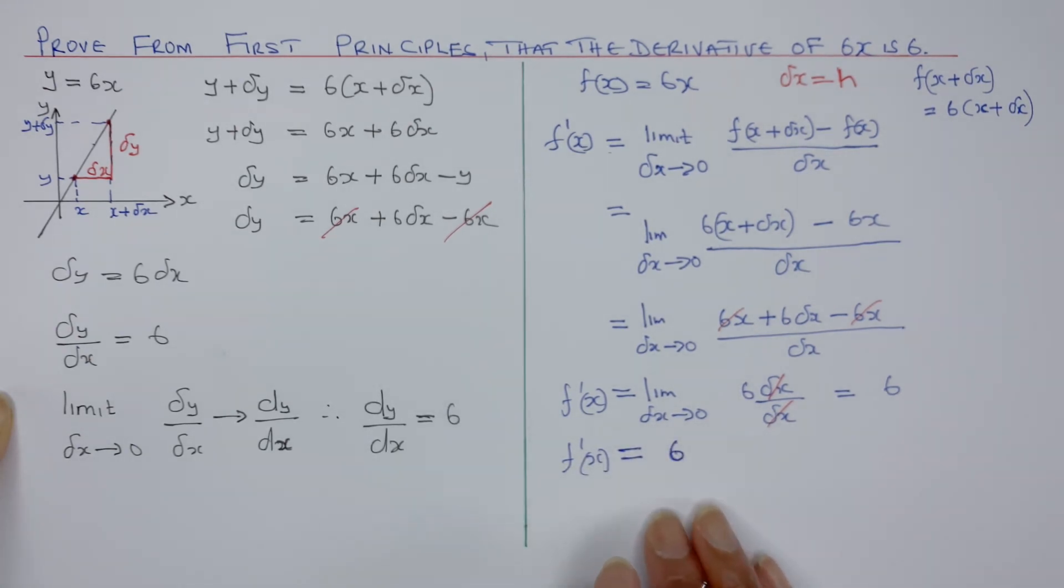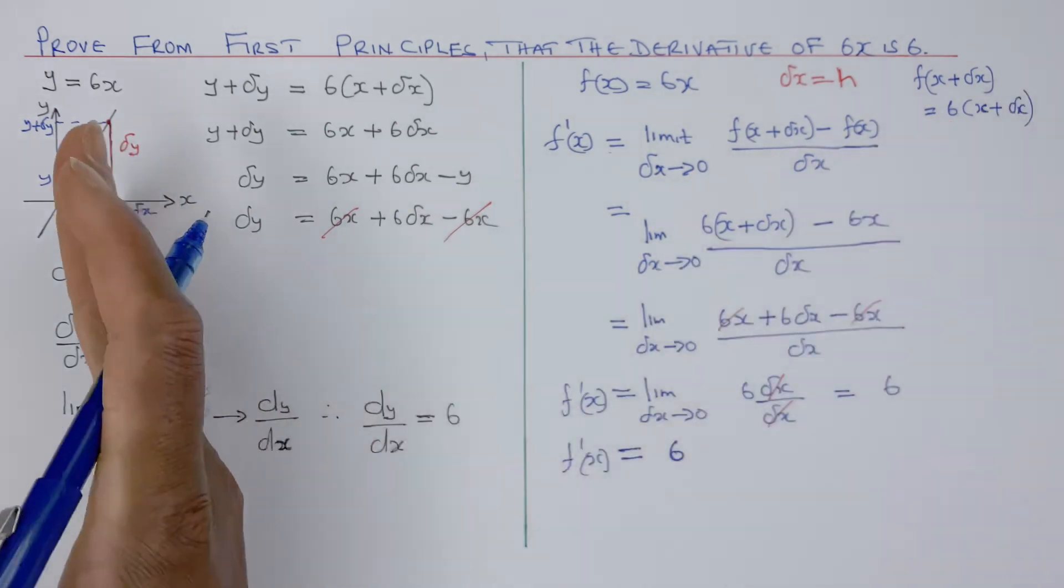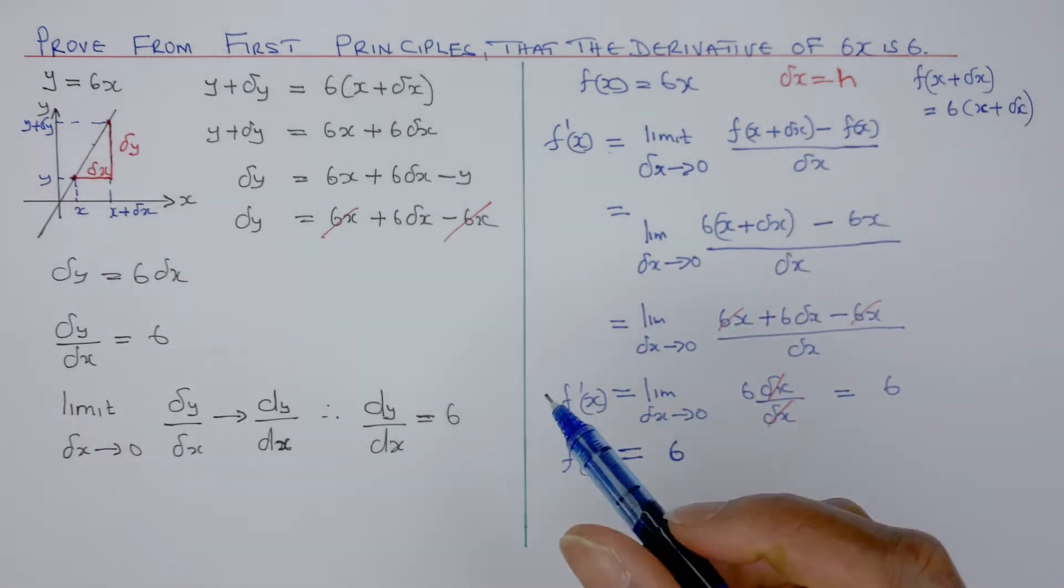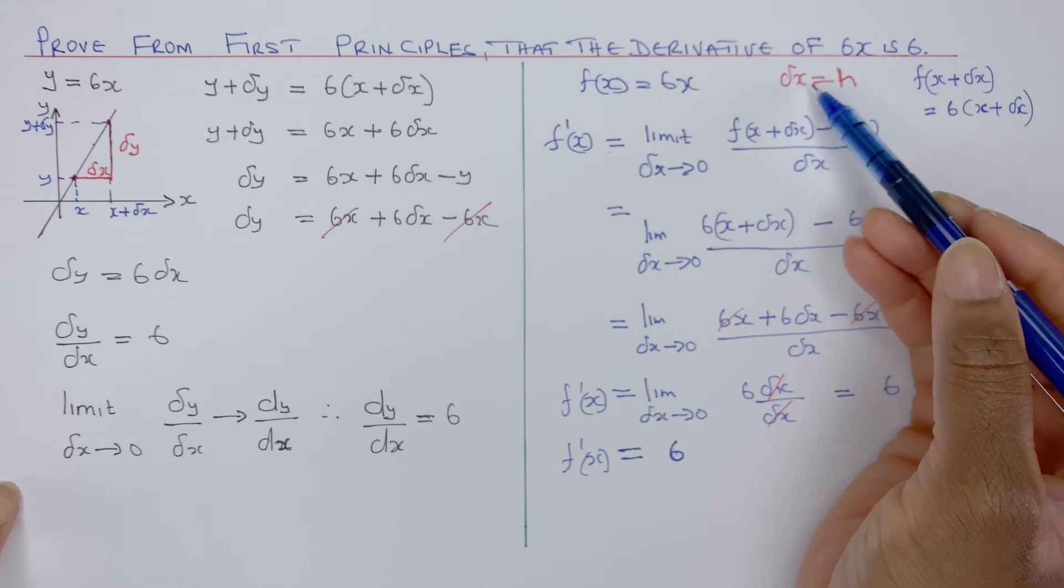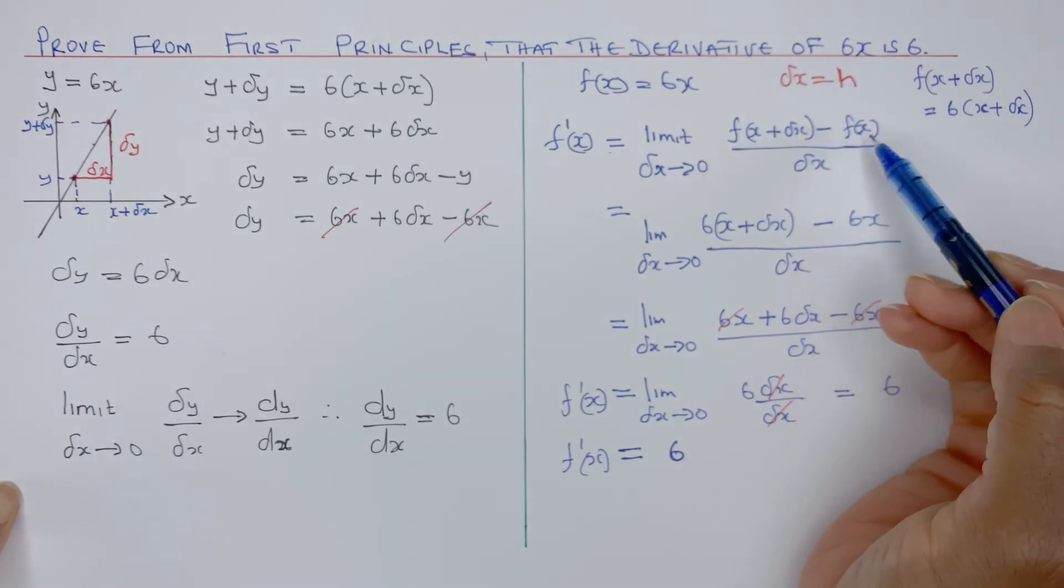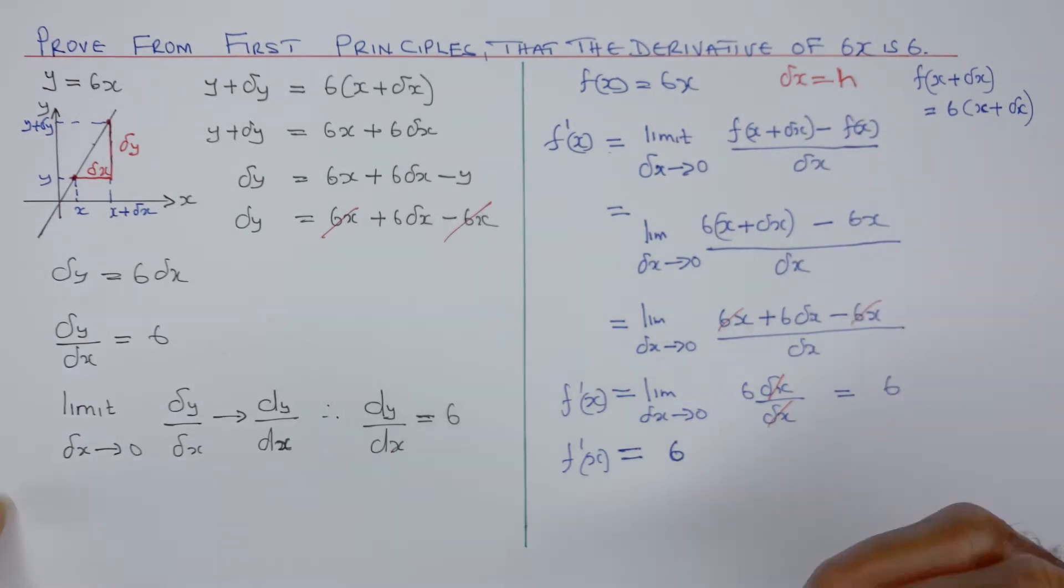And that's the derivative there. That's how you do it. So you can do that way or that way. Remember, it doesn't have to be delta x. You can put h here, h there, h. So these are just replaced by h. Just remember that f dash x equals dy dx, which can be written as y dot. You'll see that in mechanics. So that equals 6. And that's how you do it from first principle.